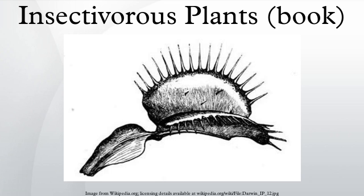Darwin wrote in his autobiography that the fact that a plant should secrete, when properly excited, a fluid containing an acid and ferment, closely analogous to the digestive fluid of an animal, was certainly a remarkable discovery.